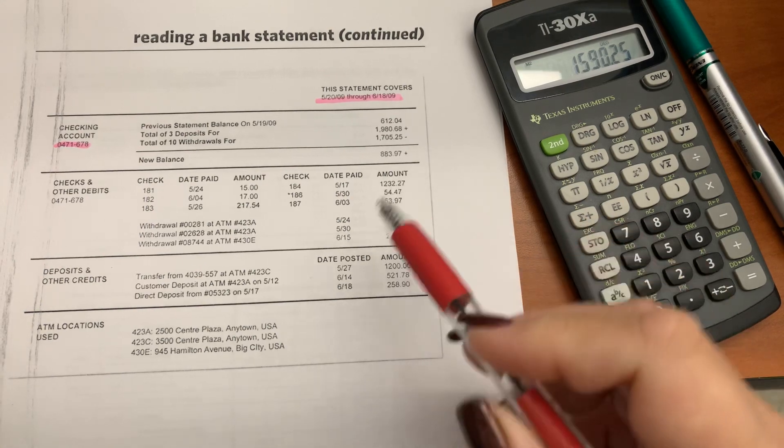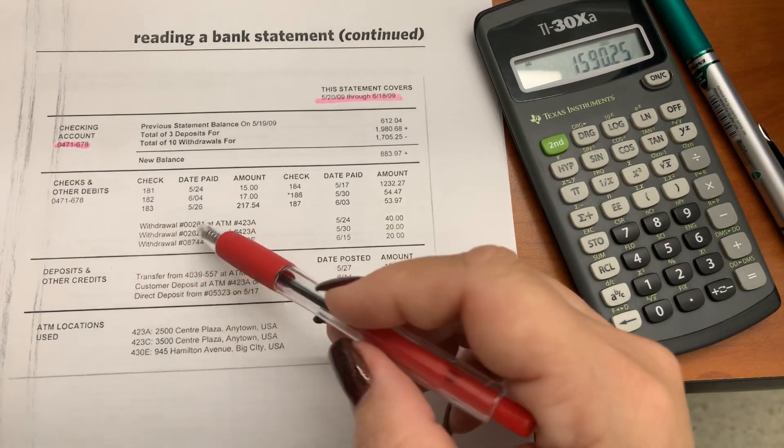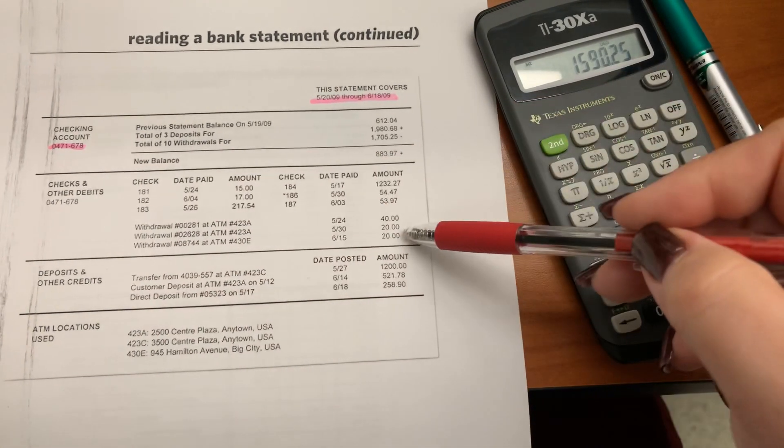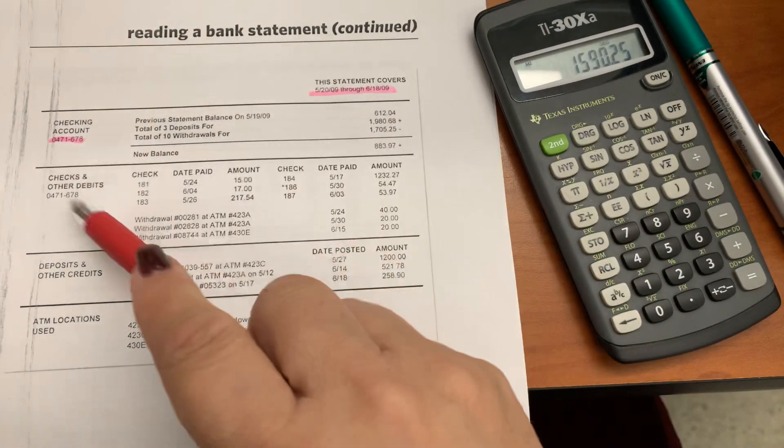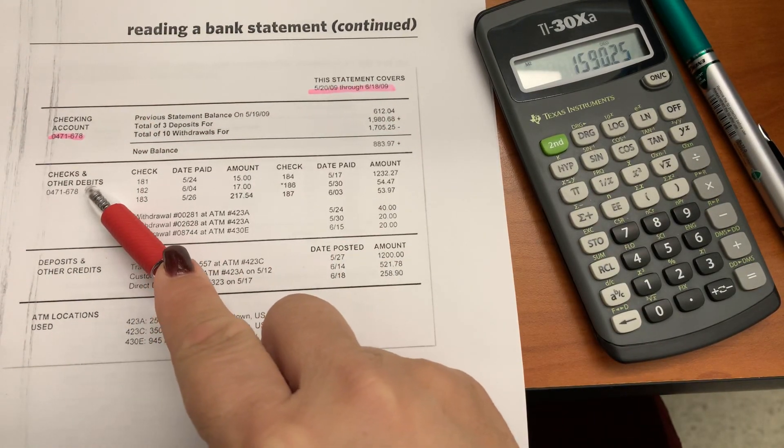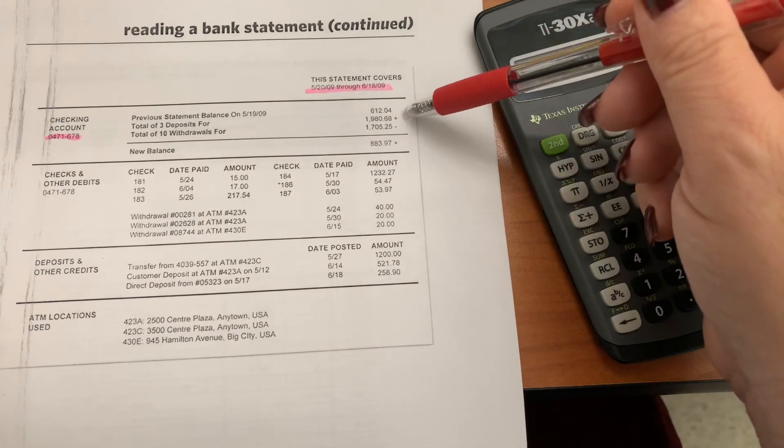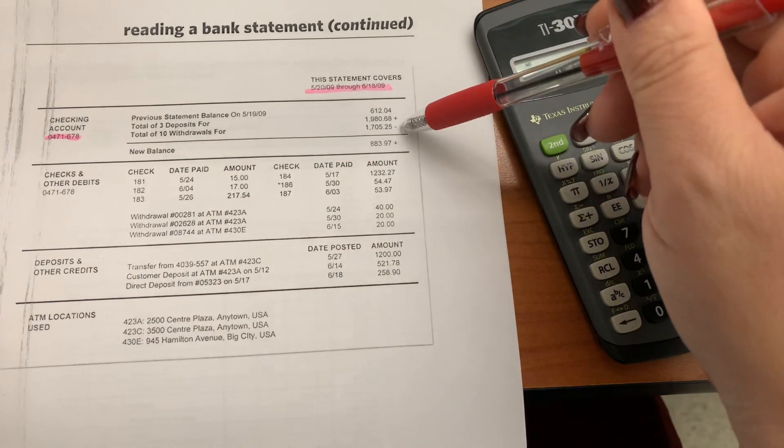There are no check card activities. That would say check card up here, and it would be listed up here with the debits. There were no service charges listed. That would be listed up here with the account information summary.